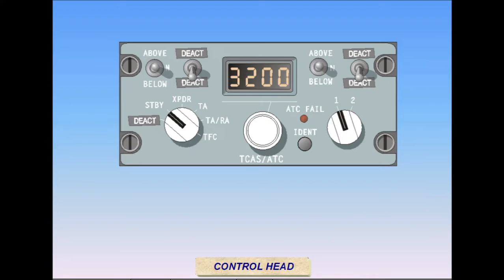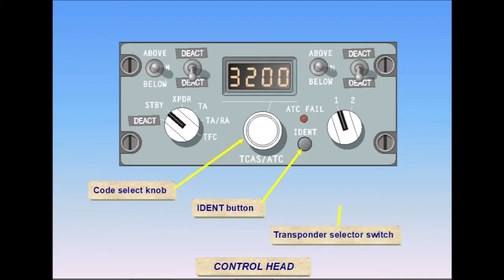Transponder codes are selected with the unlabeled Code Select knob. The IDENT button is used to squawk IDENT when instructed by air traffic controllers. Two transponders are installed to provide systems redundancy. Control of the units is determined by the selector switch position. The two systems cannot operate in the active mode simultaneously.